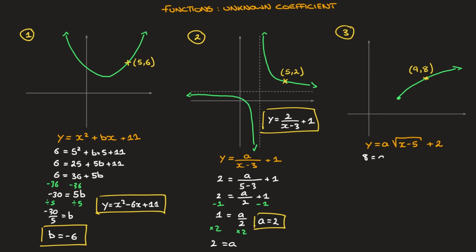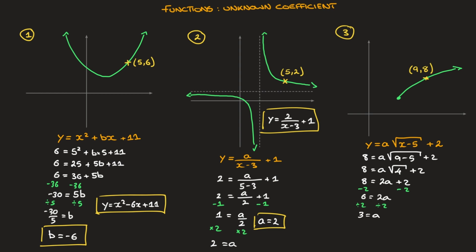Substituting gives 8 equals a times the square root of (9 minus 5) plus 2. That becomes 8 equals a times the square root of 4 plus 2. Since the square root of 4 is 2, this becomes 8 equals 2a plus 2. Subtracting 2 from both sides gives 6 equals 2a. Dividing both sides by 2 gives 3 equals a, so a equals 3. This curve's equation is y equals 3 times the square root of (x minus 5) plus 2.